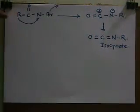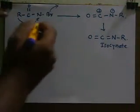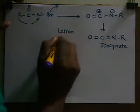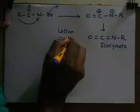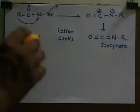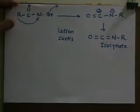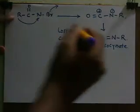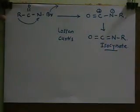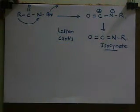This intermediate is called isocyanate. Isocyanate formation also takes place in Lossen rearrangement and Curtius rearrangement — this is the similarity between these three rearrangements: Hofmann rearrangement, Lossen rearrangement, and Curtius rearrangement all involve isocyanate formation.